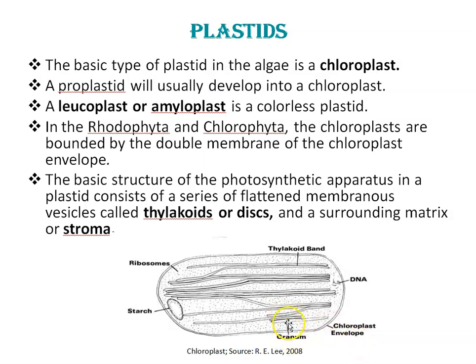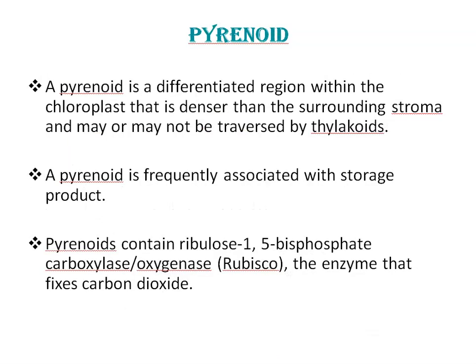You can see here: grana, thylakoid bands, DNA, starch, and ribosomes. The basic structure of the photosynthetic apparatus in the plastid consists of flattened membranous vesicles called thylakoids or discs, and the surrounding matrix or stroma. The thylakoid contains the chlorophyll and is the site for the photochemical reaction, and carbon dioxide fixation occurs in the stroma. Next is pyrenoids. A pyrenoid is a differentiated region within the chloroplast that is denser than the surrounding stroma and may or may not be traversed by thylakoids.